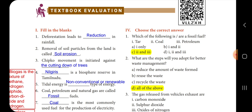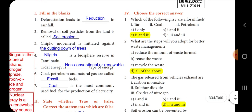Third one: the Chipko movement is initiated against dash. The Chipko movement is against the cutting down of trees. Fourth one: dash is a biosphere reserve in Tamil Nadu.